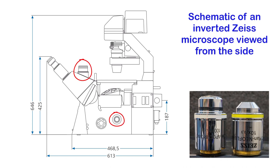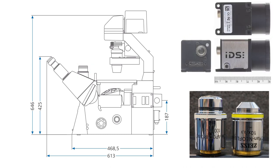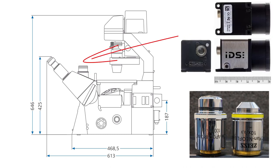We will use the one that is part of the trinocular head of the microscope. Our camera is a small USB camera shown on the right along with a scale that has units of centimeters.